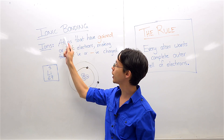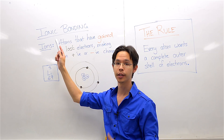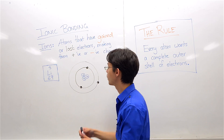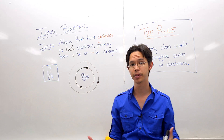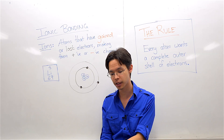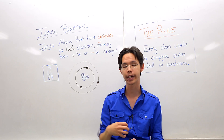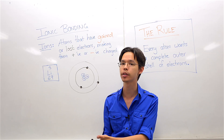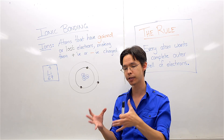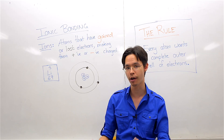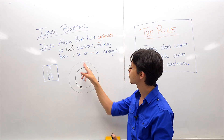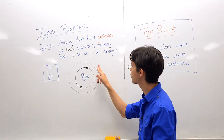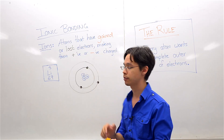Think of the word ionic — the nature of being ions. Ions are simply atoms that have gained extra electrons or lost some of their electrons, resulting in that atom becoming charged. They can have a resulting positive charge or a resulting negative charge.